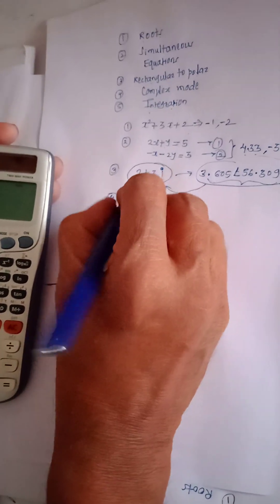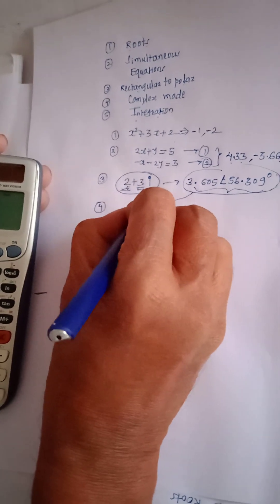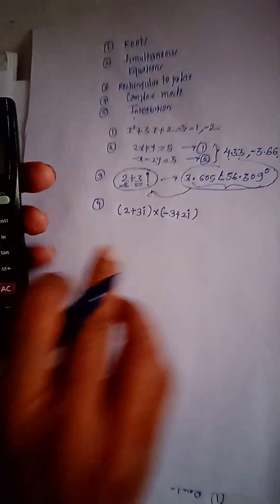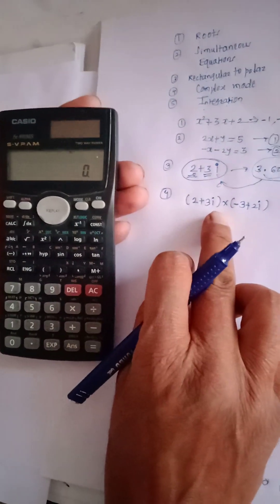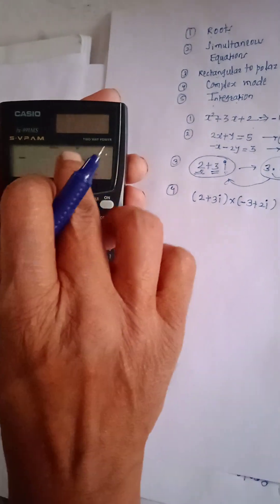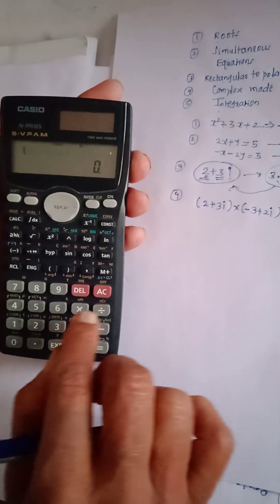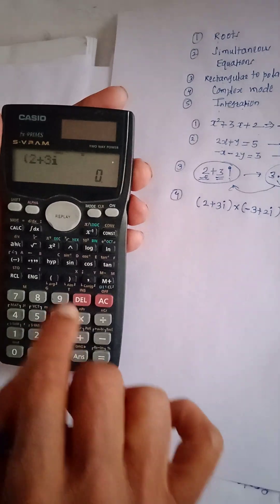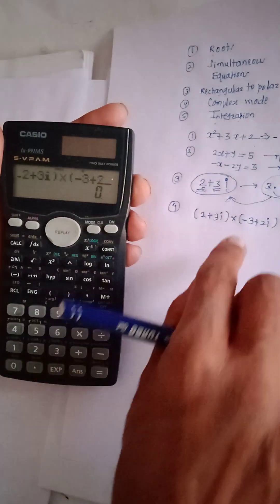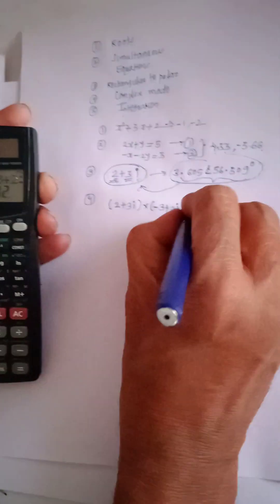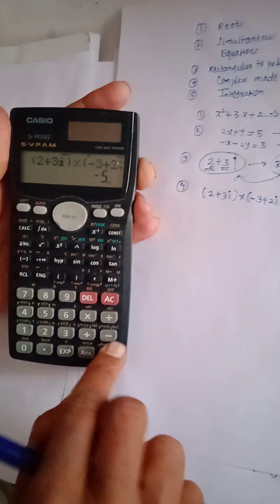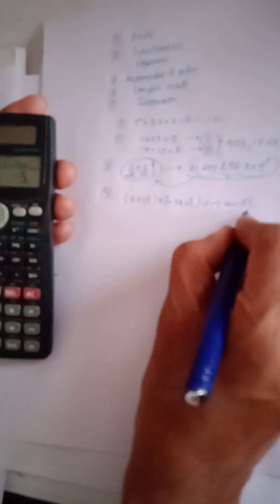The fourth calculation is how to use the calculator in complex mode. For example, to solve (2 plus 3i) multiplied by (minus 3 plus 2i), you need to enter complex mode. On the FX-991MS, press Mode and select number 2 for complex mode. Use brackets — enter the first term 2 plus 3i, pressing the Eng key to display i. Close the bracket, then multiply by a second bracket containing minus 3 plus 2i, pressing Eng for i again. Close the bracket and press Equals. The real part of the answer is minus 12. To get the imaginary part, press Shift and Equals — it is minus 5i. So the answer is minus 12 minus 5i.